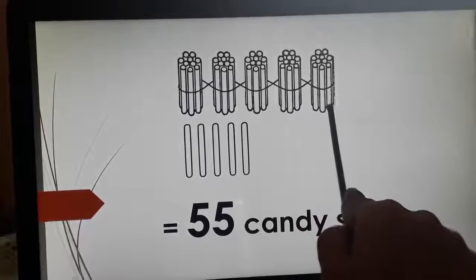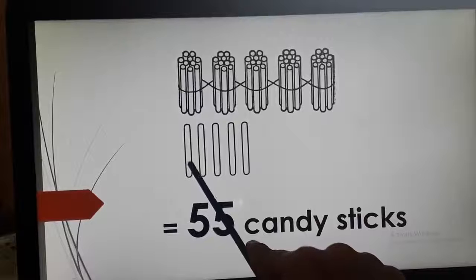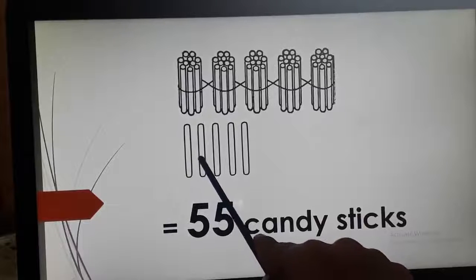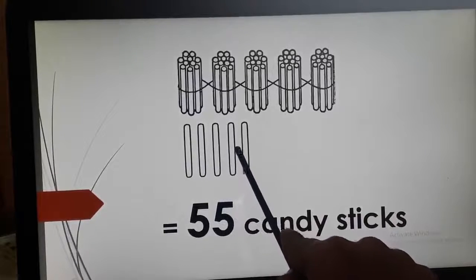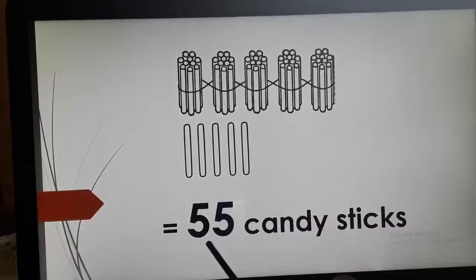Now, here 50 candies are already there and let's count how many more? 1, 2, 3, 4, 5. So, 50 and 5, 55.